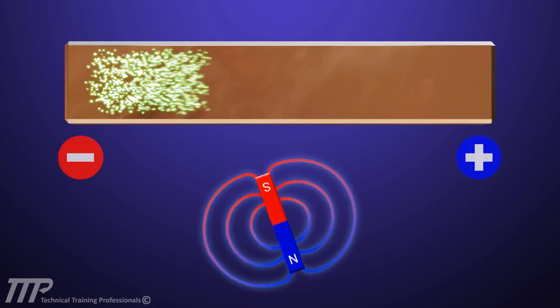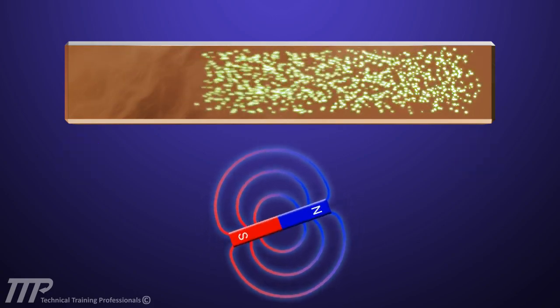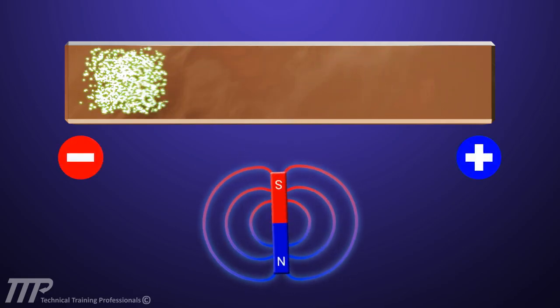On an open-ended conductor, these electrons do not go anywhere. They only create a difference in charge between the ends of the conductor.